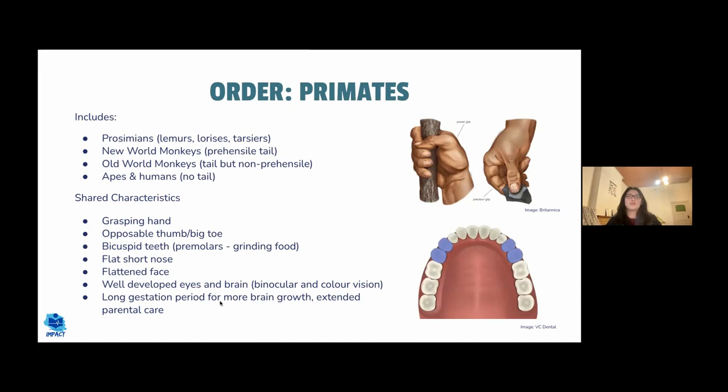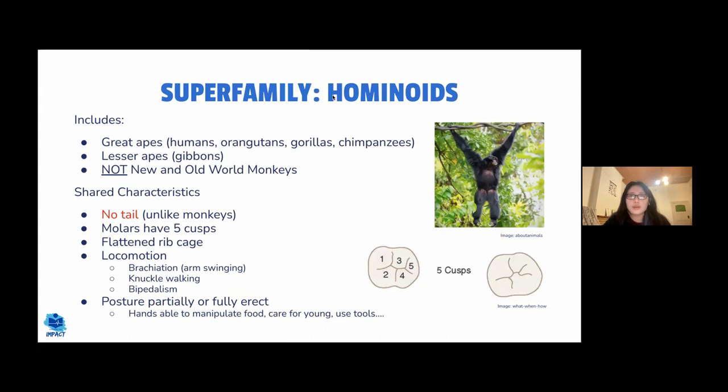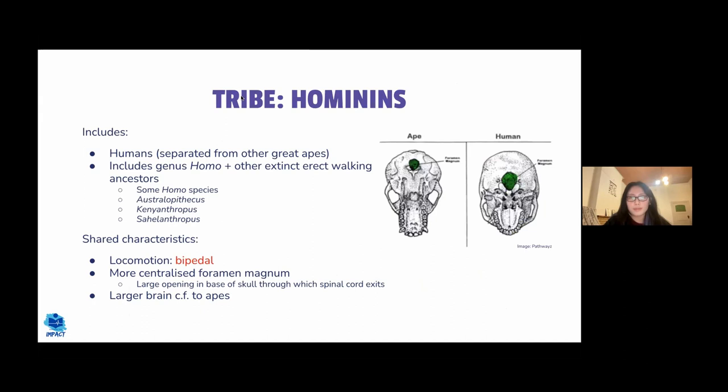Hominoids are the superfamily including great apes and lesser apes but not new or old world monkeys. Features include the absence of a tail and locomotion via brachiation, knuckle walking, or bipedalism, with a partially or fully erect posture. Hominids — a tribal classification — include humans, Homo, and all extinct bipedal ancestors such as Australopithecus. The key shared characteristic of hominids is bipedalism.